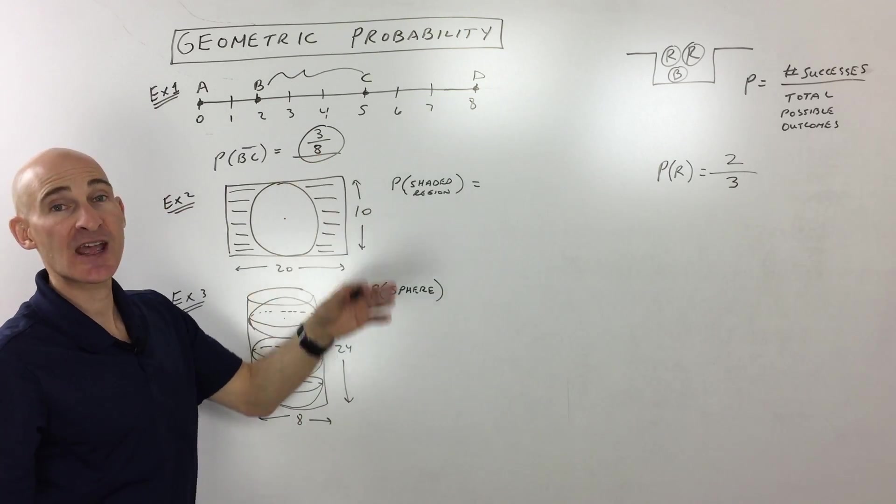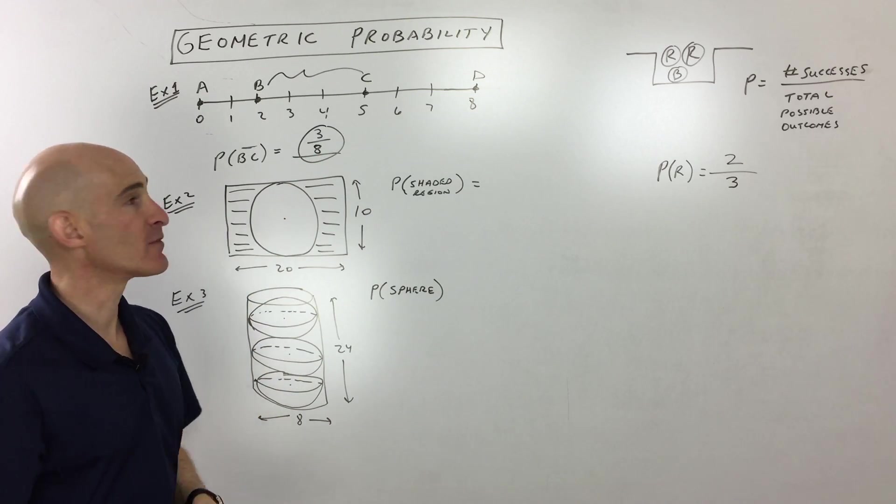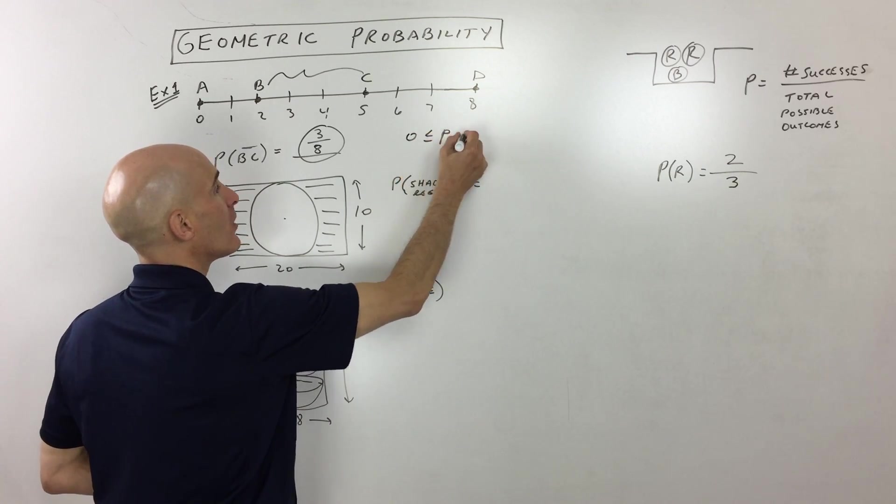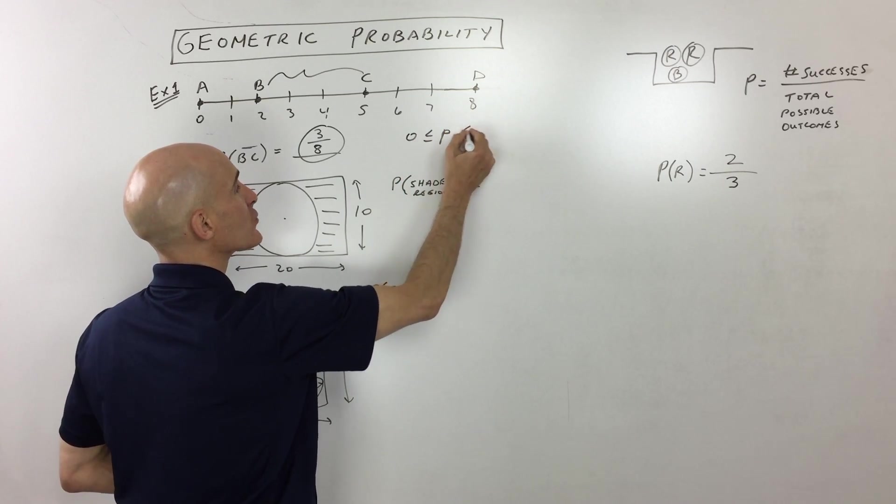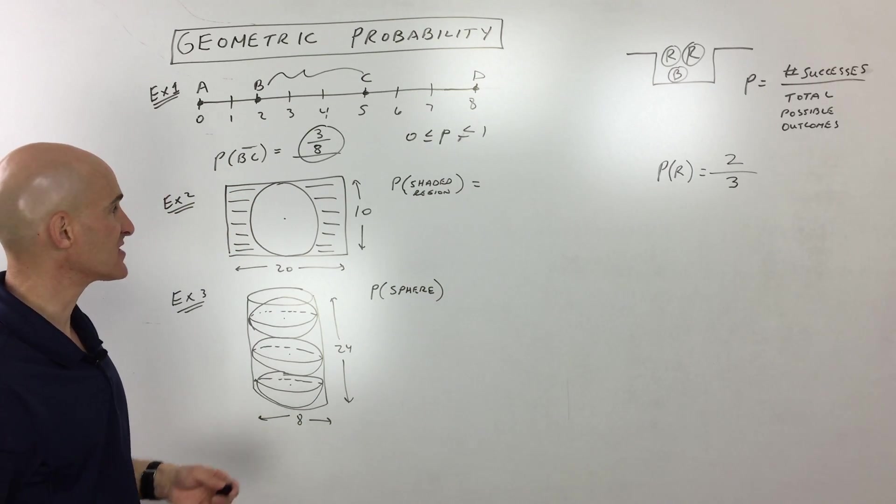Or if it says, what's the percent chance, then you could convert it into a percentage. But probability in general is between zero and one. Zero meaning no chance, one meaning 100% chance of success.